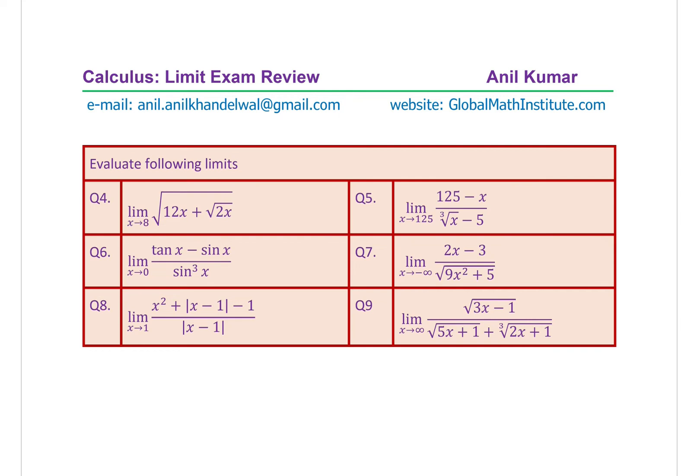Questions 4 through 9 are based on evaluating limits, with a variety of questions ranging from knowledge-based to increasing difficulty. Question 4: find the limit as x approaches 8 of square root of 12x plus square root of 2x. Question 5: limit as x approaches 125 of (125 minus x) over (cube root of x minus 5). Question 6: limit of (tan x minus sine x) over sine cubed x as x approaches 0.